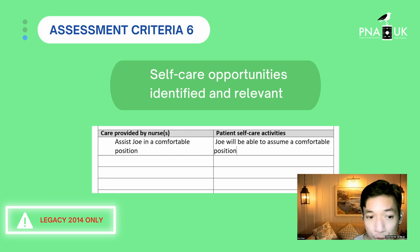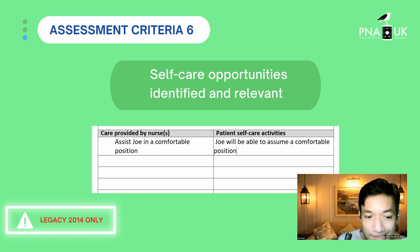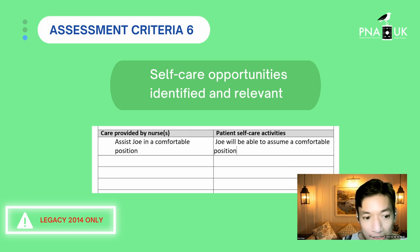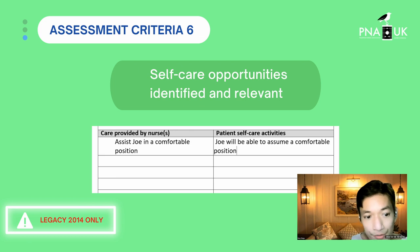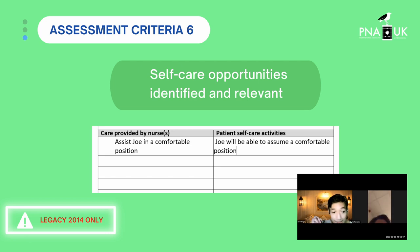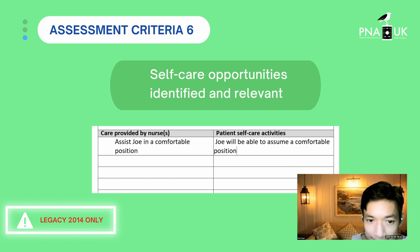Criteria number six — self-care opportunities — is only applicable for the legacy 2014 examination. If you're doing the new test of competence, you don't have to complete this section. That explains why it's reduced to 14 minutes. If doing the old examination you get 15 minutes; new test of competence is 14 minutes. This section is the major difference between the two examinations.